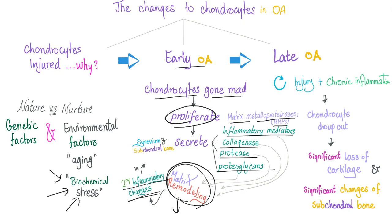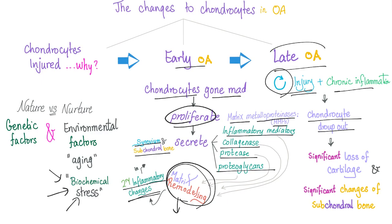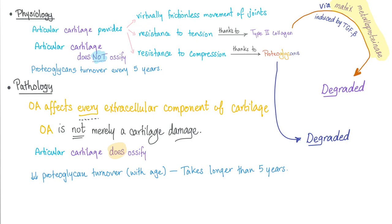In late osteoarthritis: chronic injury, chronic inflammation, repeated injury, and chondrocyte dropout — significant loss of cartilage and significant changes in subchondral bone called sclerosis, osteophytes, cysts, etc. The type 2 collagen is destroyed by MMPs such as collagenase, and proteoglycans are degraded by those enzymes. Osteoarthritis affects every extracellular component of the cartilage — it's not only mere cartilage damage, it's deeper than that. The articular cartilage does ossify in pathology, which is abnormal.